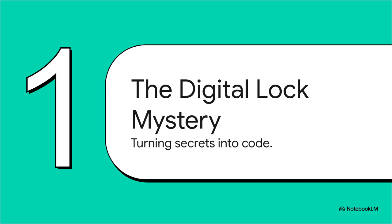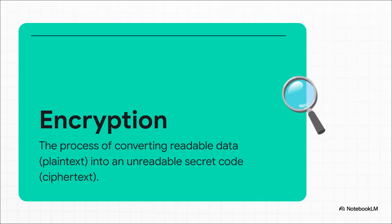At its heart, you can think of encryption as a digital lock and key system — basically a mathematical process designed for one single purpose: to turn our secrets into unreadable code, making sure only the right person can ever understand them. This process takes your normal, readable information — we call that plain text — and scrambles it into a totally unreadable secret code, which we call ciphertext. The goal is super simple: if anyone intercepts the message, all they're going to see is a bunch of meaningless gibberish.